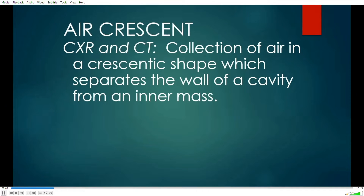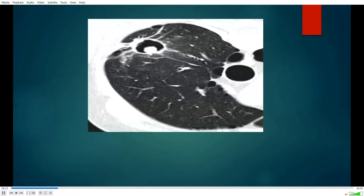The air crescent sign — you can see it on a chest x-ray or CT. It's a collection of air in a crescentic shape, which separates the wall of a cavity from an inner mass. Here we see a cavity, you can see the wall, and then we see this mass within it — it contains gas that separates it from the remainder of the lining of the cavity.